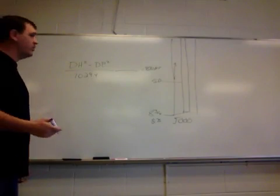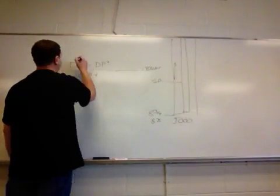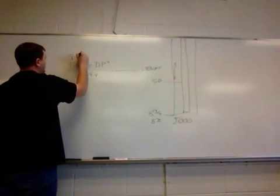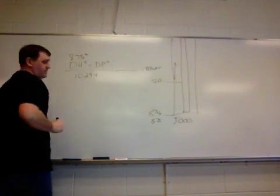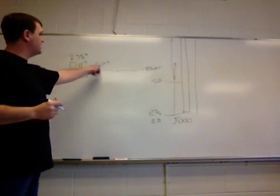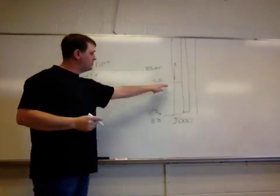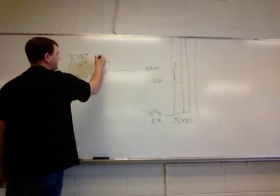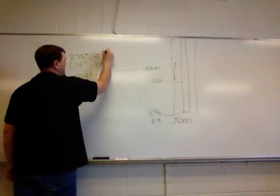You need to take the diameter of your hole, which is 8 3/4, and square it. 8.75 squared. And then you need to subtract the drill pipe squared, which is 5 inch. So you take the 5 inch drill pipe and square it.